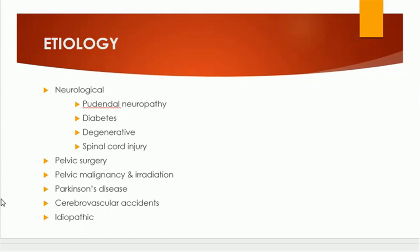Neurological factors in anal incontinence include pudendal neuropathy, diabetic neuropathy, degenerative neuropathy, and spinal cord injuries. Pelvic surgery, pelvic malignancy, and irradiation for malignancy can also lead to incontinence. Parkinson's disease and CVA are other causes, and there may also be idiopathic incontinence.